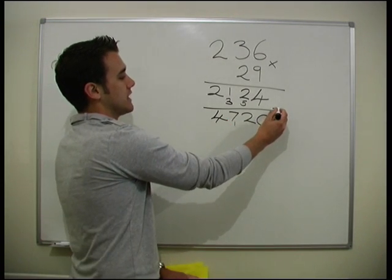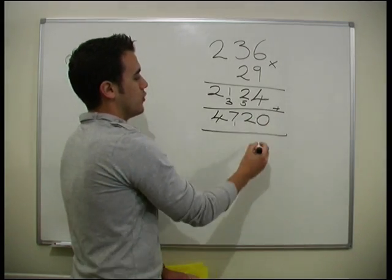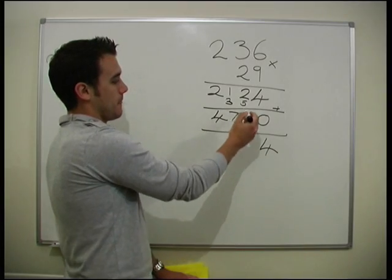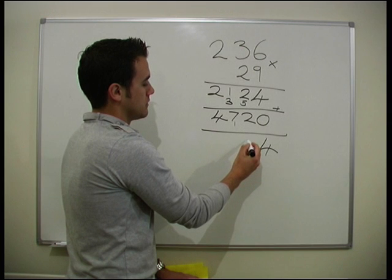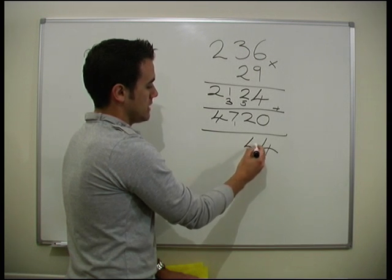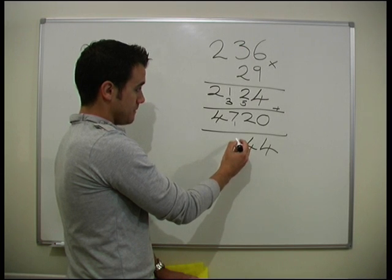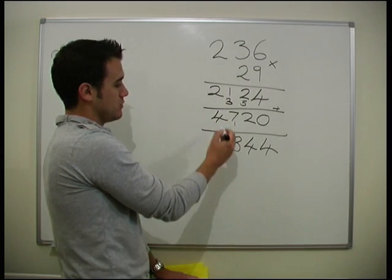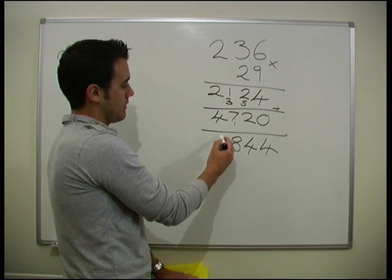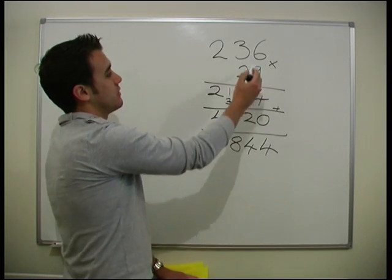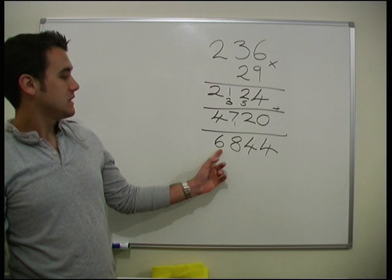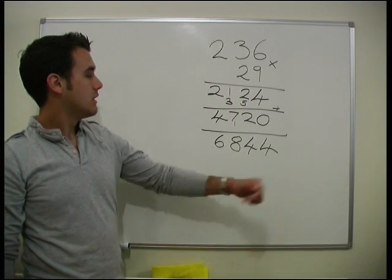Okay. Now we need to add those 2 together to get the final answer. 4 plus 0 is 4. 2 plus 2 is 4. 1 plus 7 is 8. And the 2 plus 4 is 6. So we get 236 times 29 gives us 6,844.